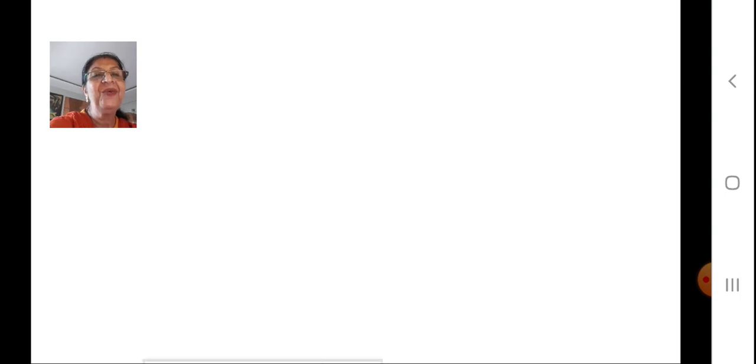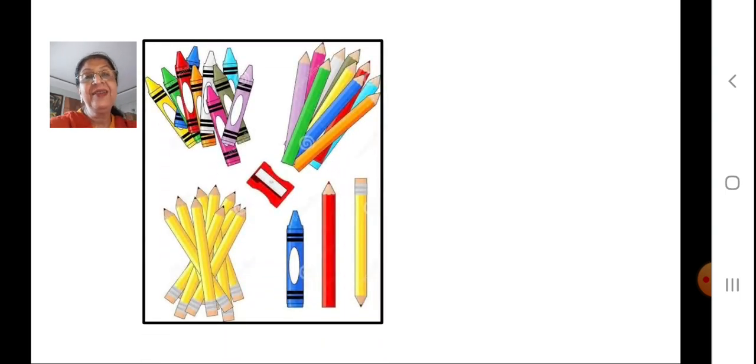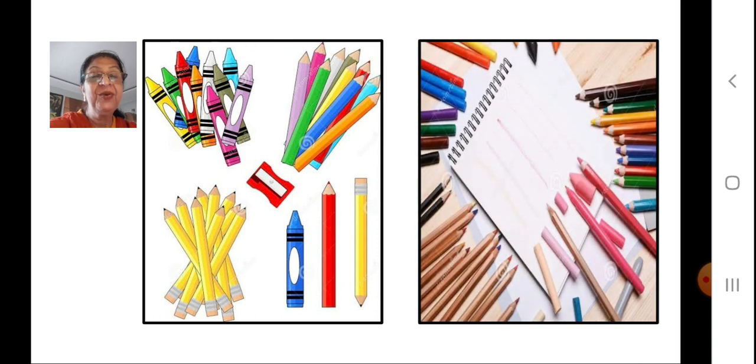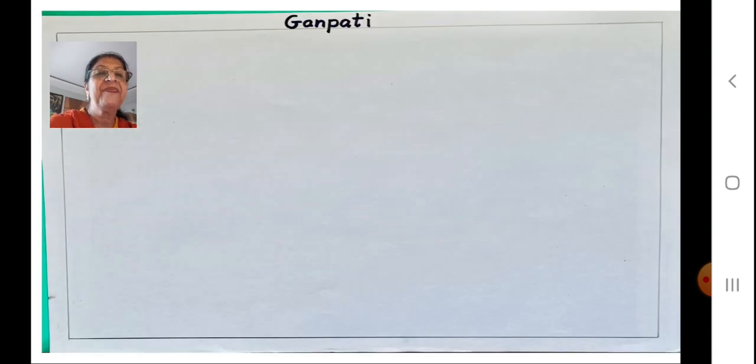So now children, get ready with your drawing books, pencil, eraser, colours and a black sketch pen. Yes. Are you ready? Should we start? Yes. Now today what are we going to make? Ganpati. So you have to make a margin like always you do and on top the topic is Ganpati. G-A-N-P-A-T-I, Ganpati.